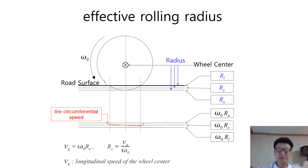I explained the effective rolling radius in the third video topic on the longitudinal slip. And also, I explained that effective rolling radius is affected by various physical factors like tire structure, speed, wear, pressure, temperature, and many more.